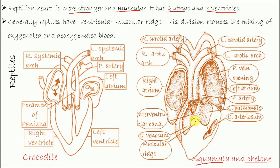One part is called cavum venosum — this part is called cavum venosum. And another part is called cavum pulmonale — here it is, cavum pulmonale. And the third part is called cavum arteriosum — this one is cavum arteriosum.